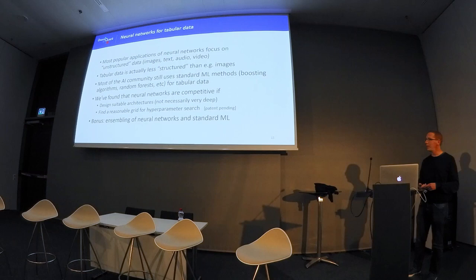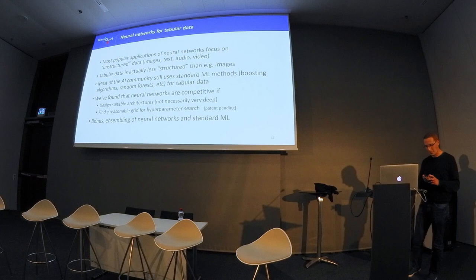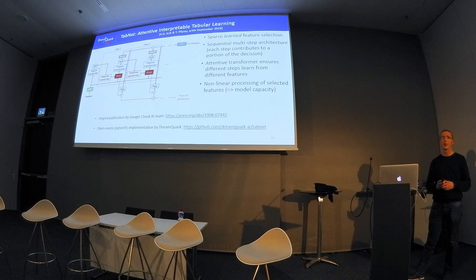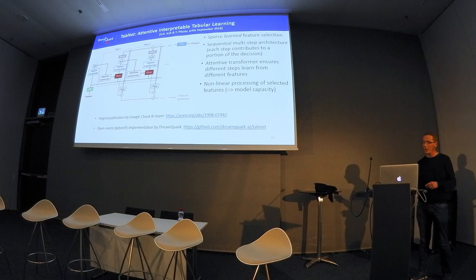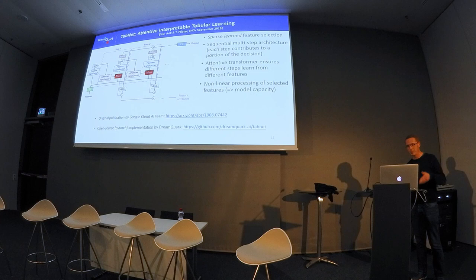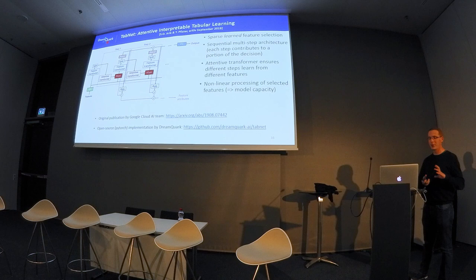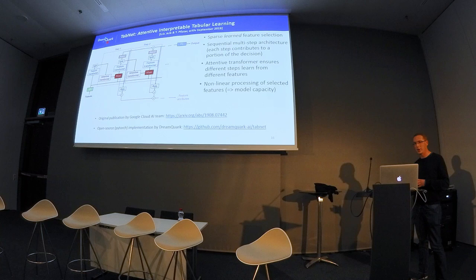One challenge with neural networks when you don't have someone full-time fine-tuning is finding the right grid for hyperparameter search. The architectures we know and love — convolutional neural networks — don't work well on tabular data, so we need new ones. They're not necessarily very deep but can be quite complex. We also found systematically that there's a lot to be gained by making ensembles of neural networks and standard machine learning methods. This work on architectures originates from people at Google Cloud AI, and we at DreamQuark have produced an open-source PyTorch implementation.